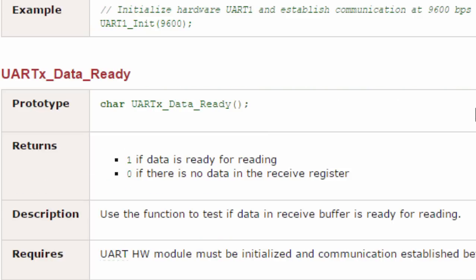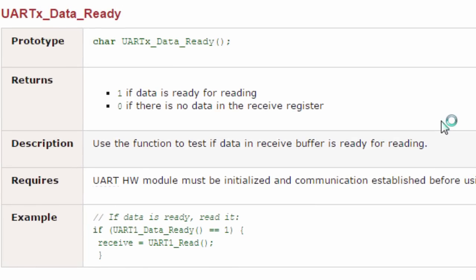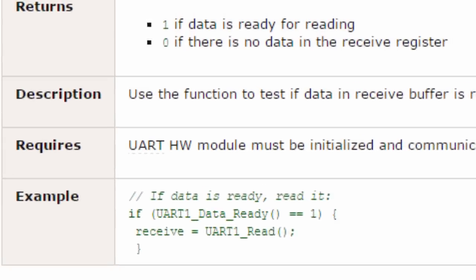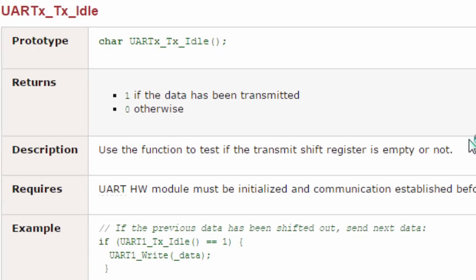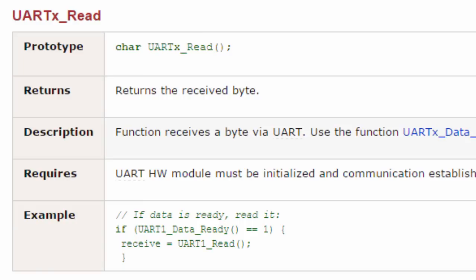The other routine is UART_Data_Ready — you can use this function to test if data in the received buffer is ready for reading. For example: if UART1_Data_Ready() equals 1, then read it. Next is UART_TX_Idle, which tests if the transmit shift register is empty. The UART_Read function receives a byte via the UART module. Use UART_Data_Ready first to test if data is ready, then call UART1_Read() to read a single byte from the receive buffer.